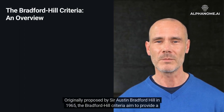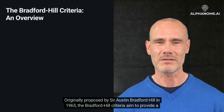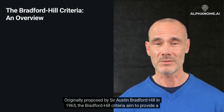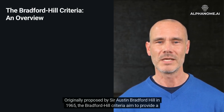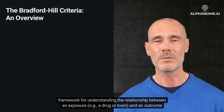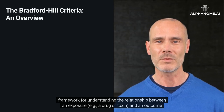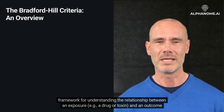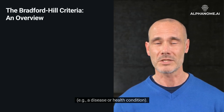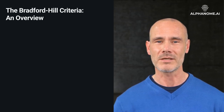Originally proposed by Sir Austin Bradford Hill in 1965, the Bradford Hill Criteria aim to provide a framework for understanding the relationship between an exposure, e.g. a drug or toxin, and an outcome, e.g. a disease or health condition. There are nine criteria.